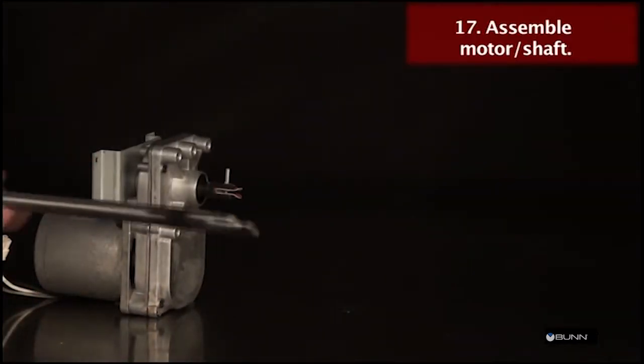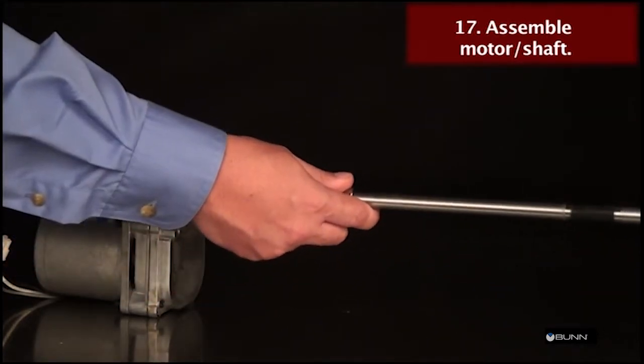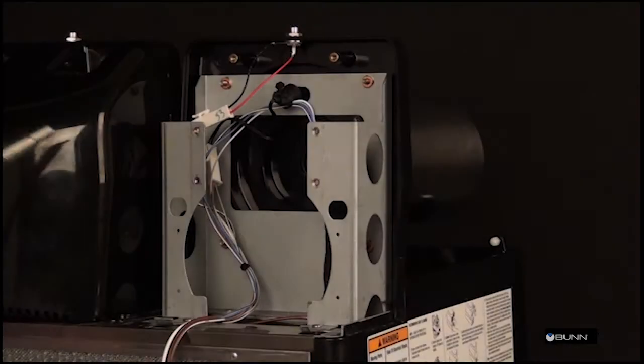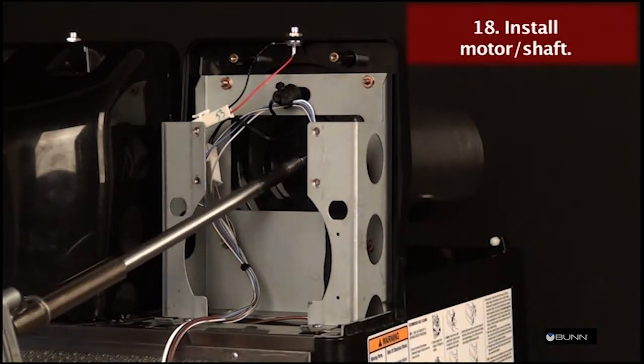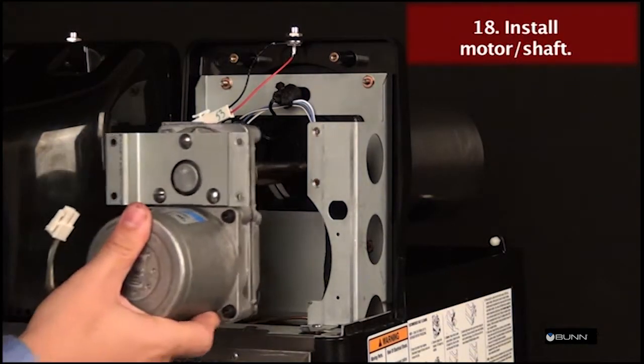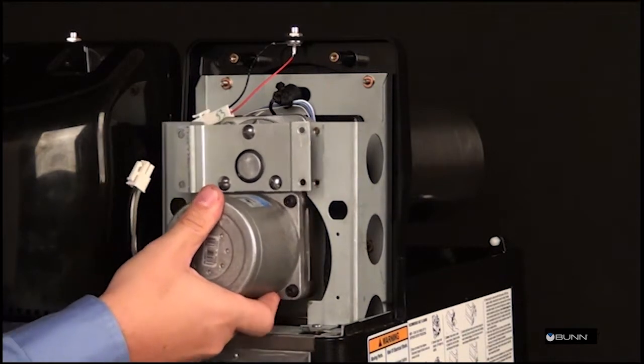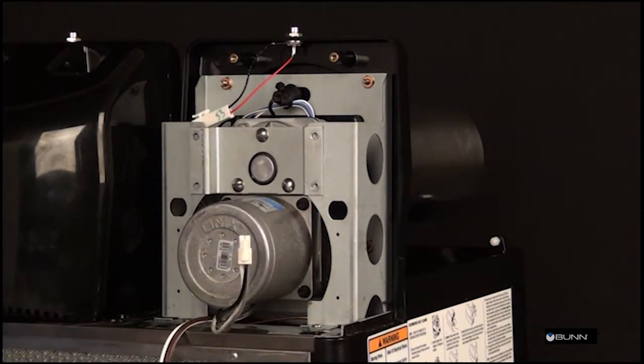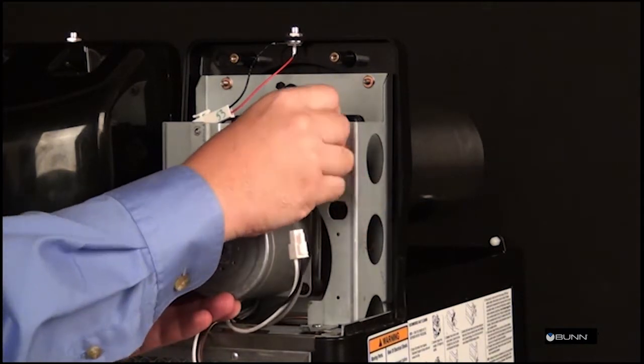Install auger shaft assembly onto the motor shaft. Assemble motor shaft assembly, then install assembly into cooling drum. Make sure the pins do not hit the sensor board and cooling drum seal is not dislodged as the shaft passes through.